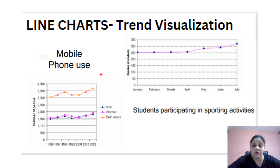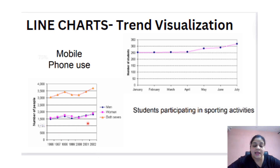In the second case, we want to analyze the trend of mobile usage between different genders — men and women. We can easily see that from 1996 to 2002, the usage of mobile phones is almost equal among men and women. And if you want to combine the usage of both genders, we can see that it sums up and we reach the combined graph.